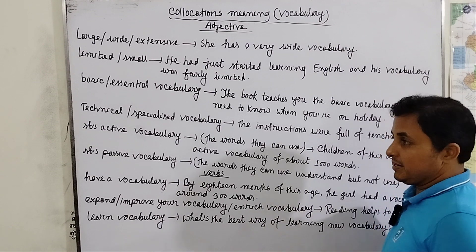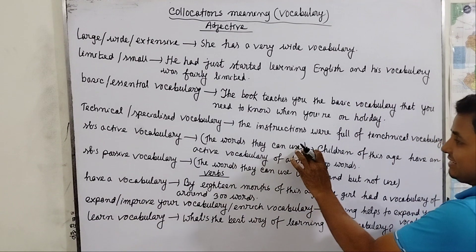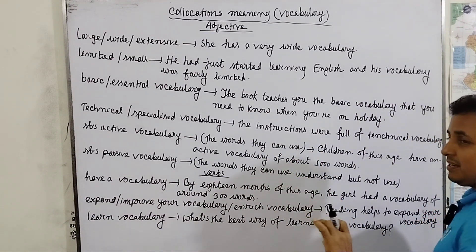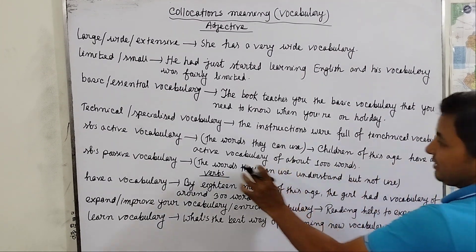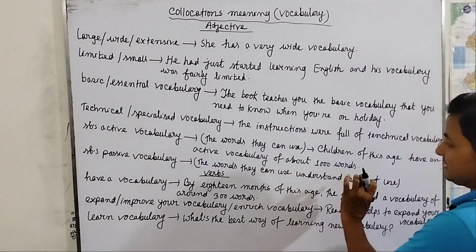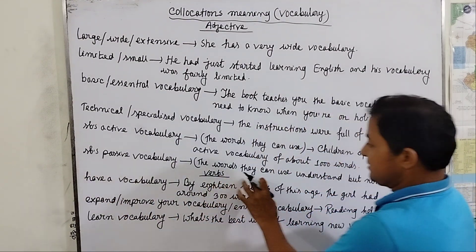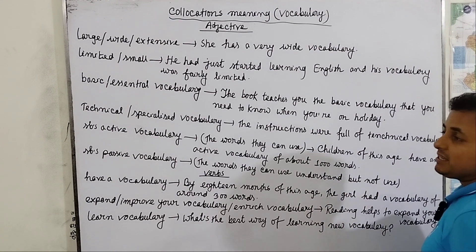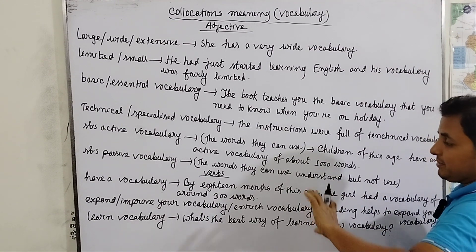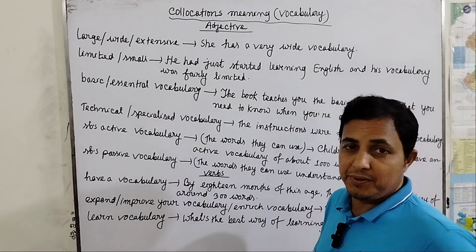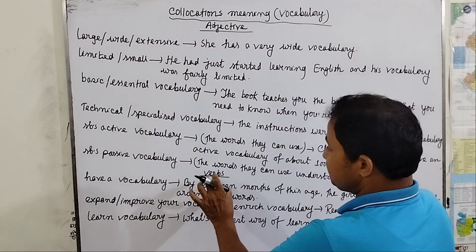Active vocabulary means the words a subject can use. For example: children of this age have an active vocabulary of about 1,000 words. Passive vocabulary means the words a subject can understand but not use — words they can understand but not use in practice.